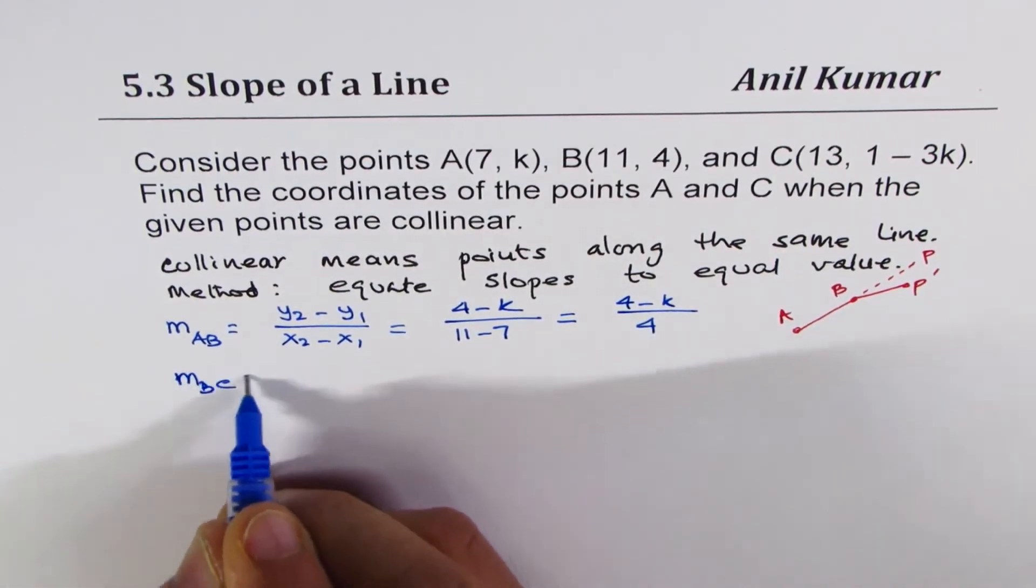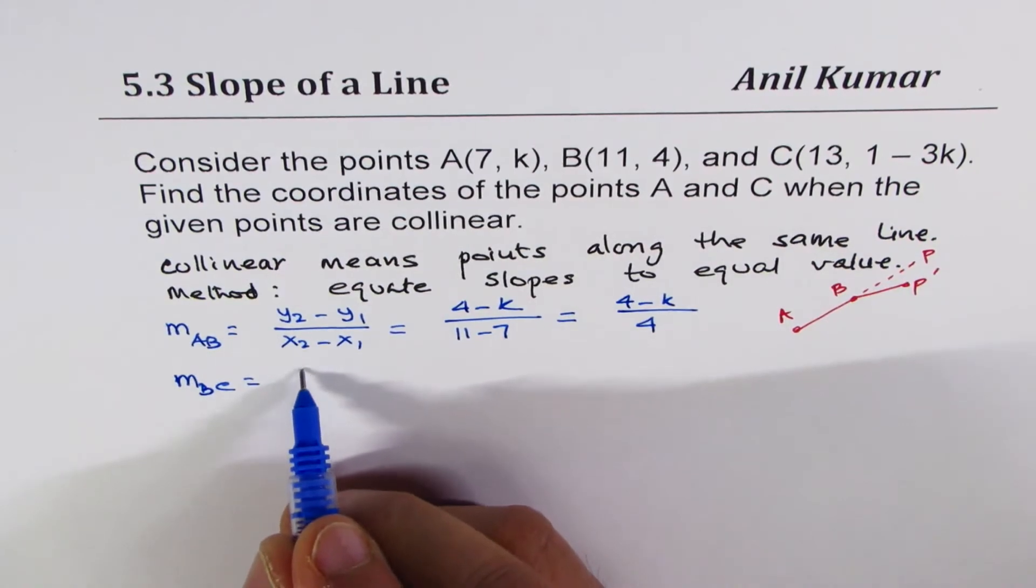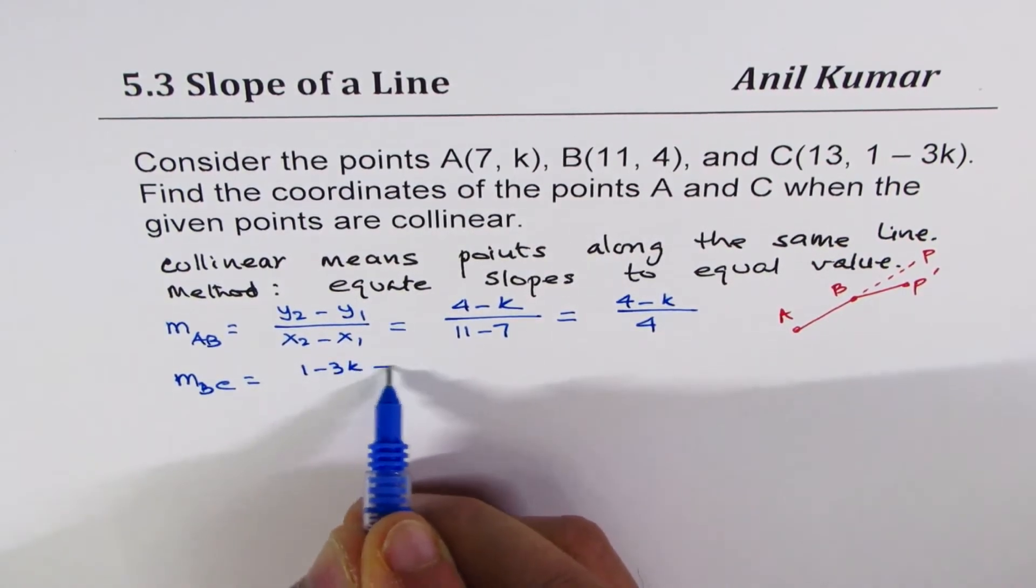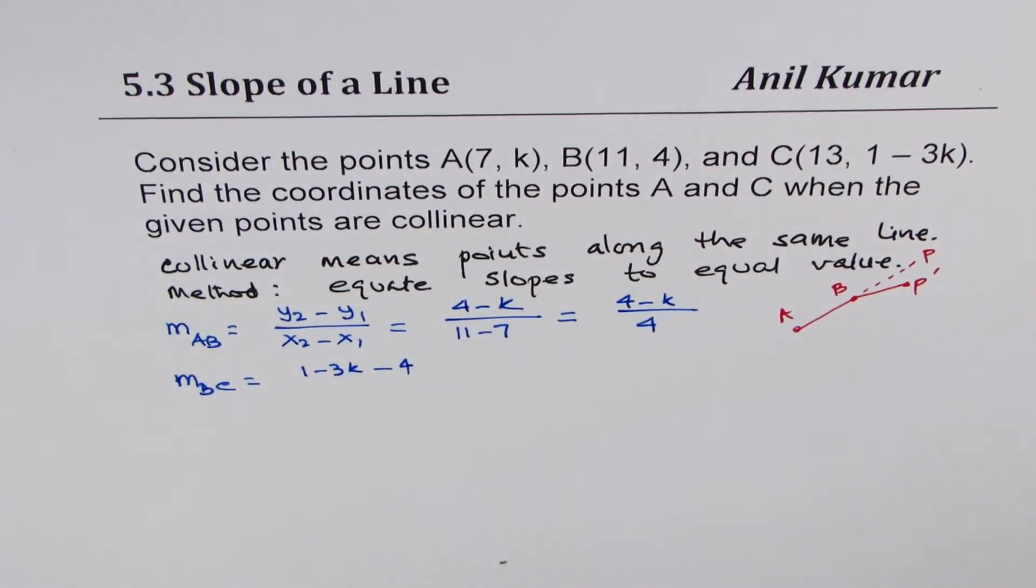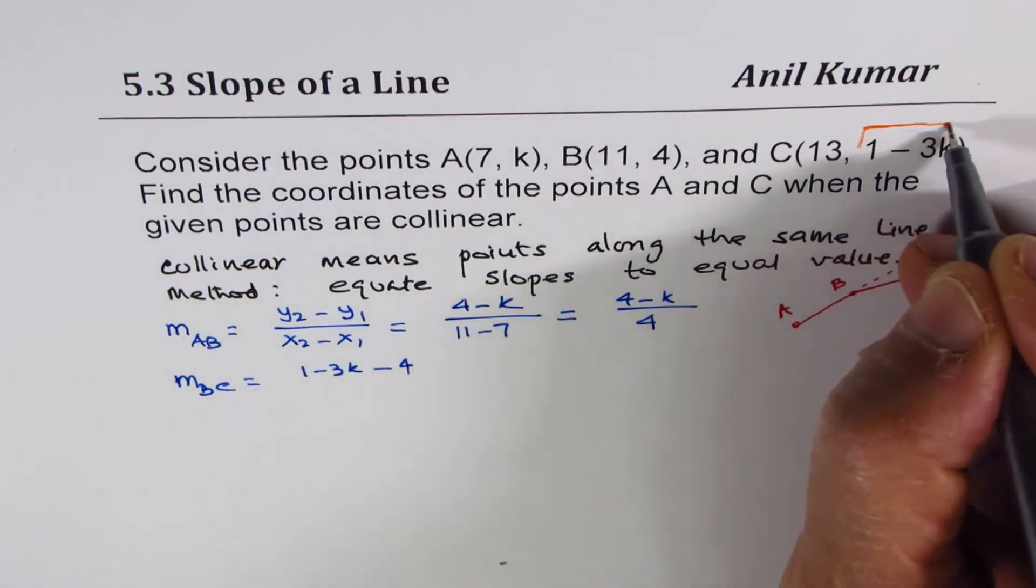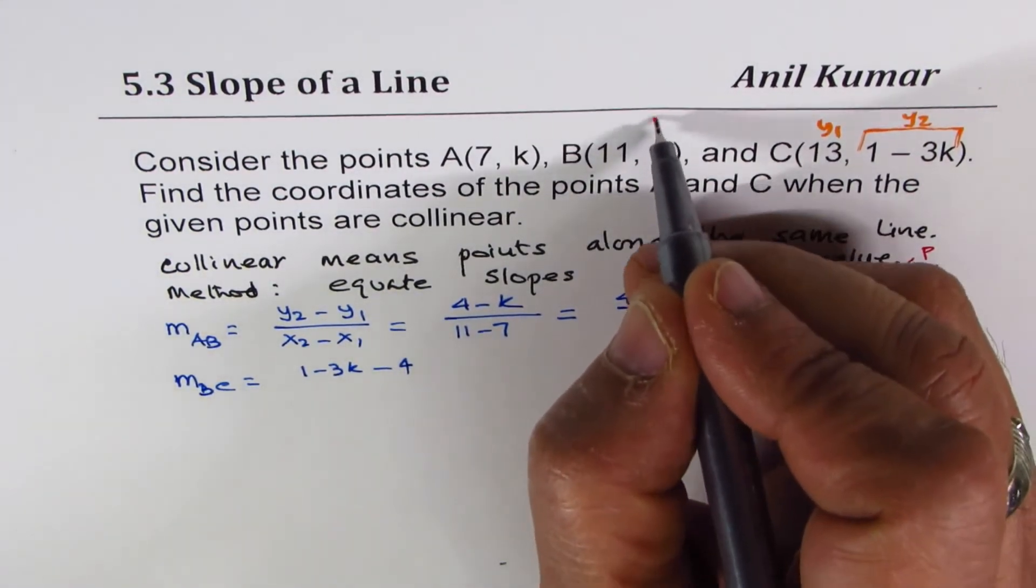This value of Y, which is 1 minus 3K minus 4. So in this case, see the value of Y, this is your Y2. This is your Y2. This is Y1. And here this is,